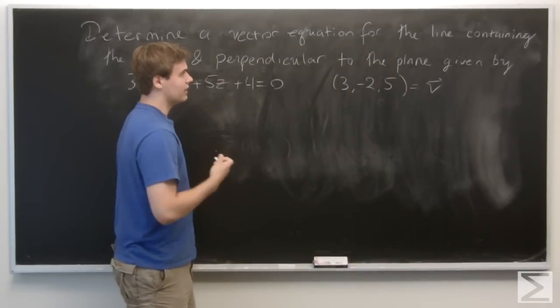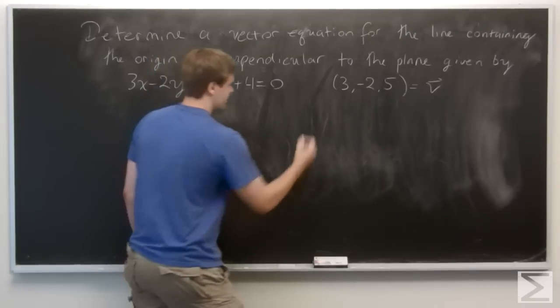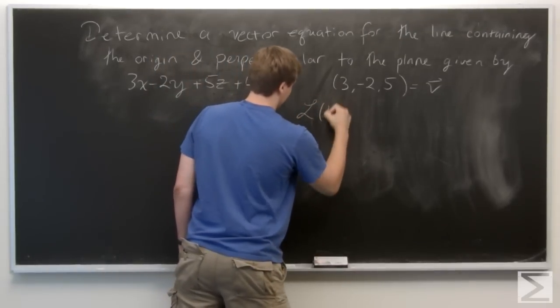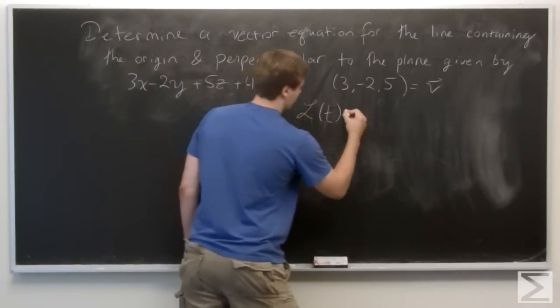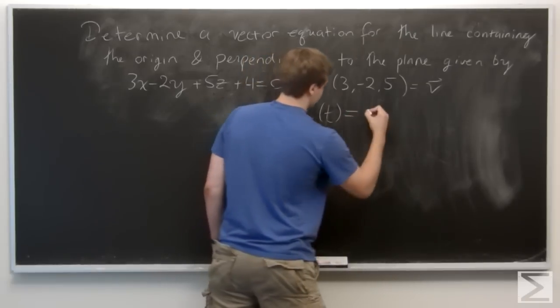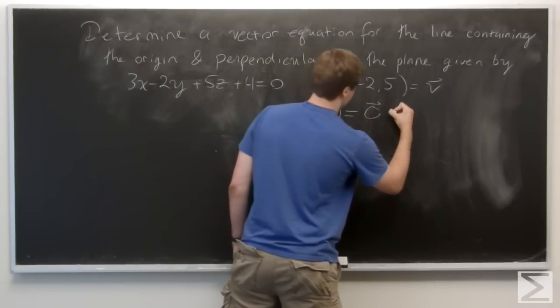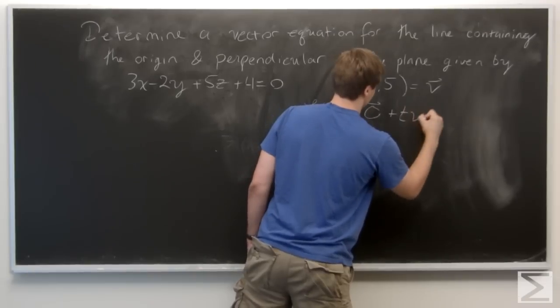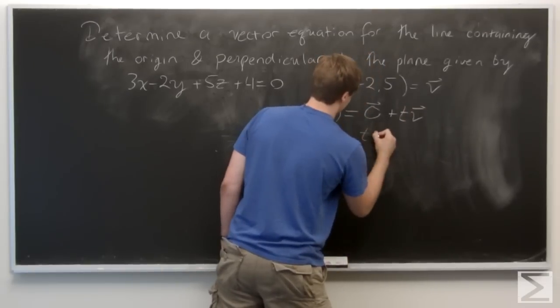So the equation of the line that we want to define is L of t equals the origin, 0, plus tv, where t is a real number.